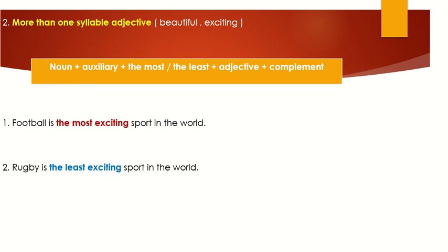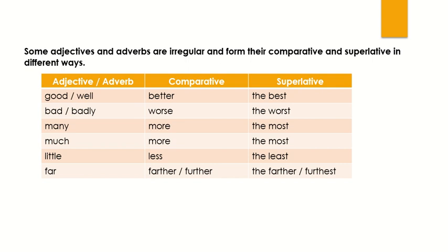Now look at this table. Some adjectives and adverbs are irregular and form their comparative and superlative in different ways — you have to memorize this table very well. 'Good' or 'well': comparative 'better,' superlative 'the best.' 'Bad' or 'badly': 'worse,' 'the worst.' 'Many': 'more,' 'the most.' 'Much': 'more,' 'the most.' 'Little': 'less,' 'the least.' 'Far': 'farther' or 'further,' 'the farthest' or 'the furthest.' Memorize this table very well.